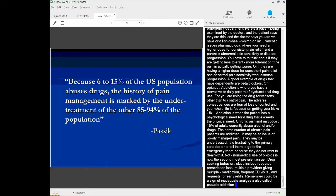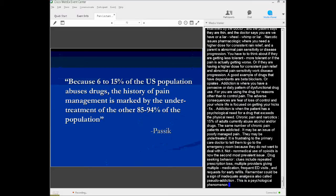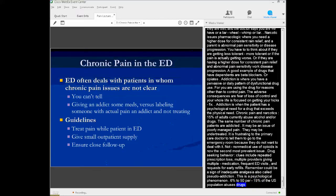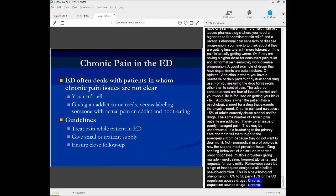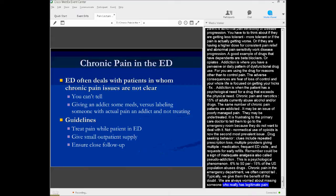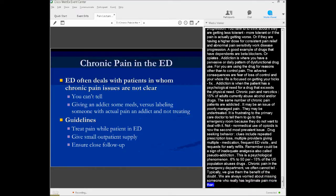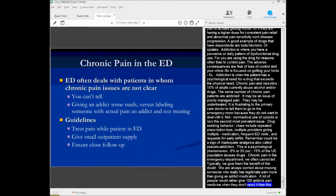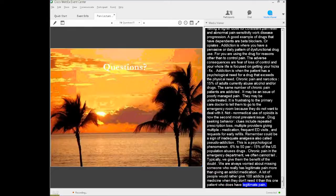Drug-seeking behavior clues are repeated complaints of losing their prescription, multiple providers giving medications, frequent visits to the emergency department, or frequent requests for early refills. Again, you always got to be cognizant of the fact that it may be a sign of inadequate analgesia, so-called pseudo-addiction. And tolerance and physical dependence is a physiological phenomenon, whereas addiction is psychological. Here's a great quote from a pain specialist: Because 6 to 15 percent of the population abuses drugs, the history of pain management is marked by the undertreatment of the other 85 to 94 percent. So chronic pain in the emergency department, we often can't tell. And we typically will give them the benefit of the doubt. We're always worried about missing somebody who really has legitimate pain more than giving somebody who's an addict medication. A lot of people would rather give 100 addicts pain medication when they don't need it rather than miss one patient who legitimately has pain. So treat the patient, treat the pain for all patients in the emergency department, give a small outpatient supply, and make sure that they have close follow-up.